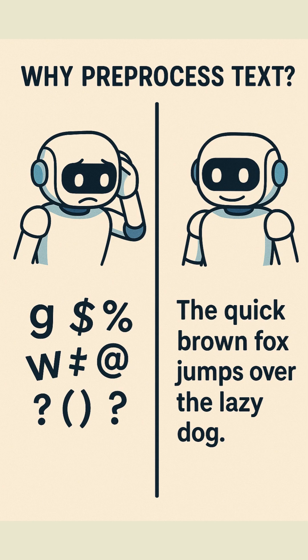Why does preprocessing matter? Raw text often contains noise like punctuation, inconsistent casing, or irrelevant words that can confuse models. Preprocessing helps improve accuracy, reduce complexity, and speed up learning.